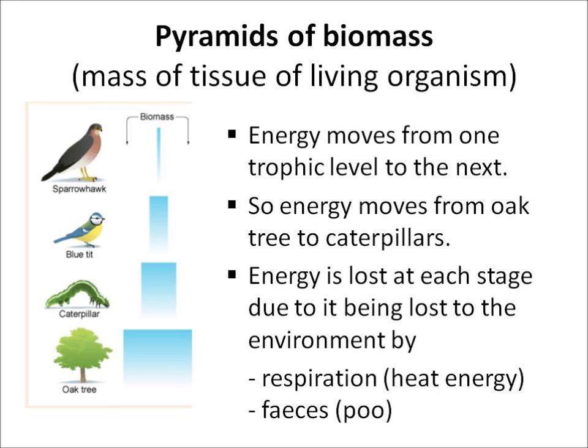We're now looking at how energy moves up a food chain, up a food web. At each level, energy is lost as it moves from one trophic level to the next. So energy is lost as it moves from an oak tree to a caterpillar, and energy is lost as it moves from a caterpillar to the blue tits.